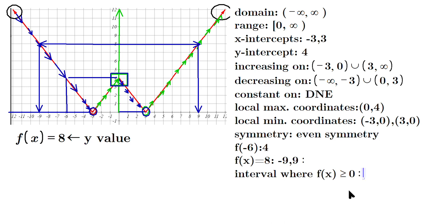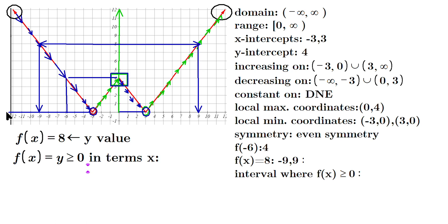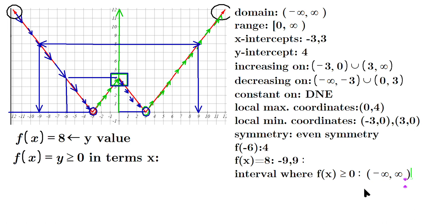Where is F of X greater than or equal to zero? Remember that F of X is just another way of saying Y. In other words, where is the Y coordinate greater than or equal to zero in terms of X? That happens all the way from negative to positive infinity. If you look at any point on the graph, the Y coordinate is always zero or greater. At the local minima the Y coordinate is zero, at the local maximum Y is four, and at any other point Y is always greater than zero. So the interval where F of X is greater than or equal to zero is negative infinity comma positive infinity, terminated with parentheses. That's how you can analyze a graph like this.